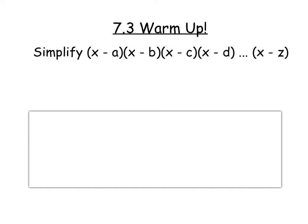Let's look at a warm-up situation that looks really complicated. Can we simplify (x minus a)(x minus b)(x minus c)(x minus d) all the way up through (x minus z)? People generally think about it as 26 factors — every letter of the alphabet — so is it going to be like x to the 26th and a whole bunch of other stuff? It probably would be if we were actually multiplying this all out, but there's one little trick. Right before x minus z would be x minus y, and right before that would be x minus x.